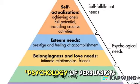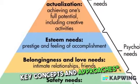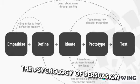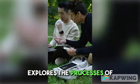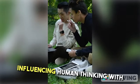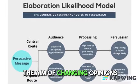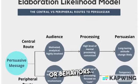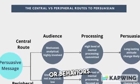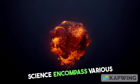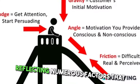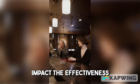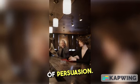Psychology of Persuasion: Key Concepts and Approaches. The psychology of persuasion is a fascinating field that explores the processes of influencing human thinking with the aim of changing opinions or behaviors. The core concepts of this science encompass various approaches, reflecting numerous factors that impact the effectiveness of persuasion.